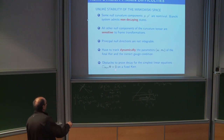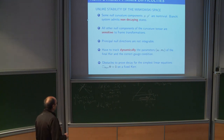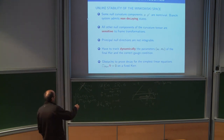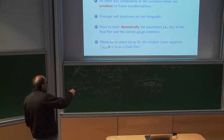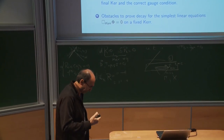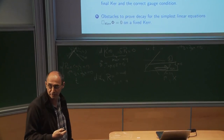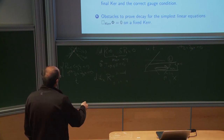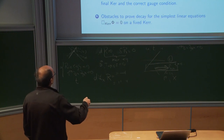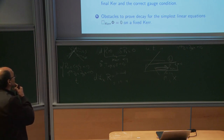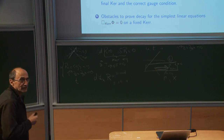Finding the correct center of mass frame and tracking down the final parameters is one of the main difficulties in proving stability, which you don't have in Minkowski space. Even if you look at very simple equations — the wave equation in Kerr for a scalar phi, much simpler than the full linear system of linearized Einstein equations — this already has lots of difficulties. These are the things you have to worry about if you want to prove the stability of black holes.